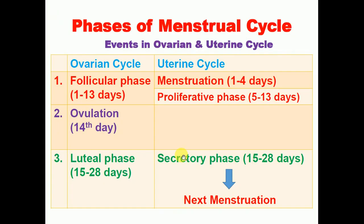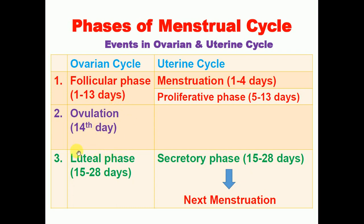During the menstrual cycle, ovarian and uterine events occur. Events in the ovary are called the ovarian cycle, and those in the uterus are called the uterine cycle. The ovarian cycle has three stages: follicular phase, ovulation, and luteal phase. The uterine cycle includes menstruation, proliferative phase, secretary phase, and the next menstruation. The follicular phase lasts from days 1 to 13, ovulation occurs on day 14, and the luteal phase from days 15 to 28, though these may vary with the health of the woman.